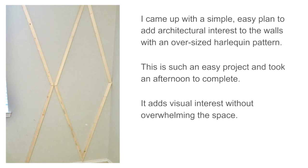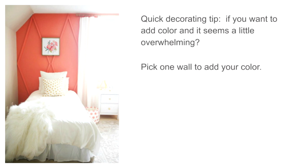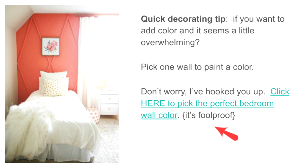Let's see another one. Carrie Ann quickly states that she came up with a way to add architectural interest to her walls by using an oversized harlequin pattern. As a reader, I am dying to know how she came up with this pattern and how she did it. So let's quickly add it where she talks about how she came up with the wood trim pattern. When using a numbered list, one tip is to add your favorite number to spark curiosity. In this example, we added "Click here to see seven wood accent walls that you can do too. Number four is my favorite." We can add our last internal link when Carrie Ann is talking about the paint color she chose. We'll put our readers' minds at ease by telling them, "Don't worry, I've hooked you up. Click here to pick the perfect bedroom wall color." Then we tease them a little using their fear, yet putting their mind back at ease by saying, "It's foolproof."